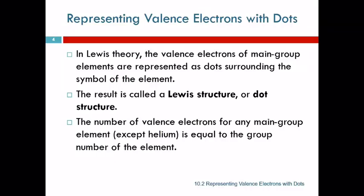In Lewis theory, we represent valence electrons with dots. We use the element symbol from the periodic table and put dots around it to represent the valence electrons. That's called a Lewis structure or a dot structure.